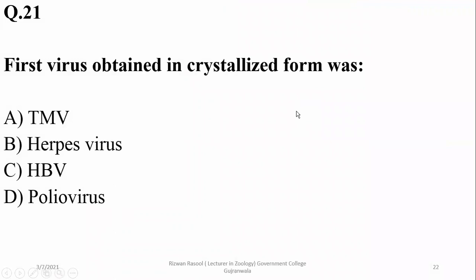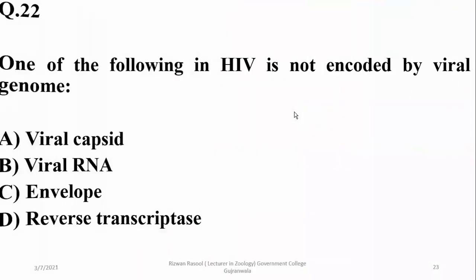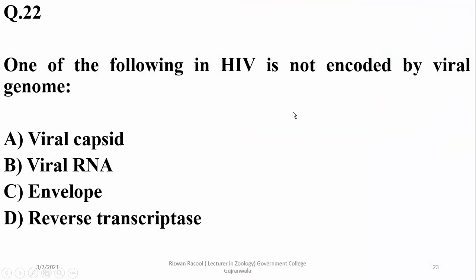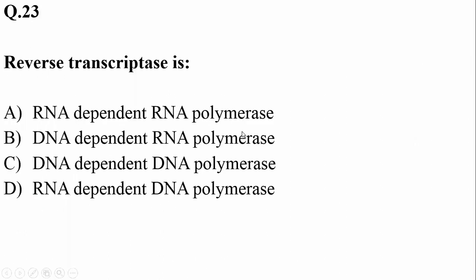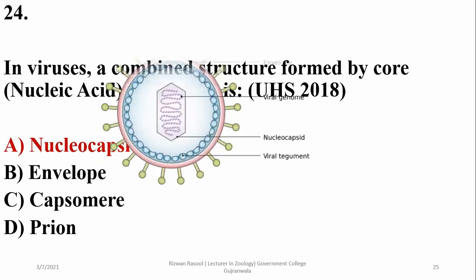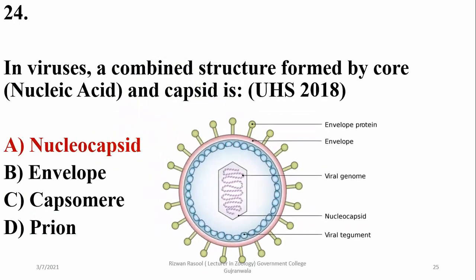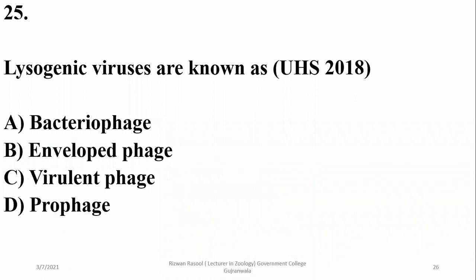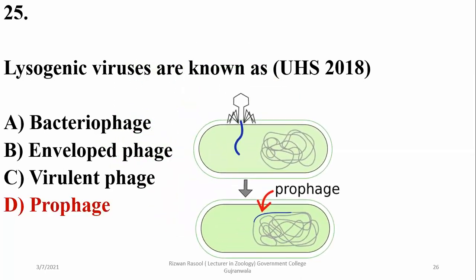The first virus obtained in crystalline form was tobacco mosaic virus, isolated by W.M. Stanley. In HIV, the viral envelope is not encoded by the viral genome — it is absorbed or taken from the host plasma membrane. Reverse transcriptase is an RNA-dependent DNA polymerase. The combined structure formed by the core nucleic acid and capsid is called the nucleocapsid. Lysogenic phages are also known as avirulent phages or prophages because they form prophages in their incorporated form.